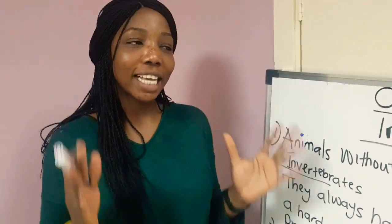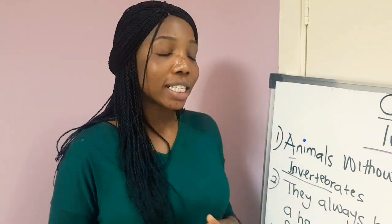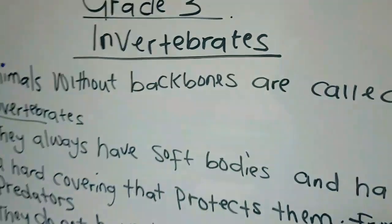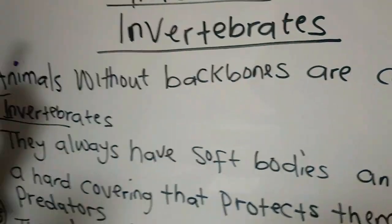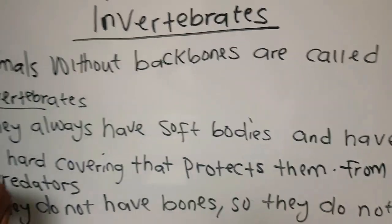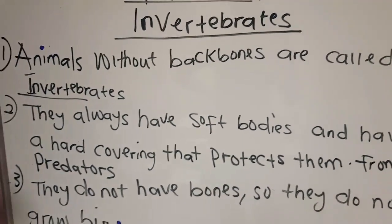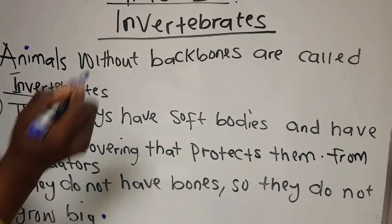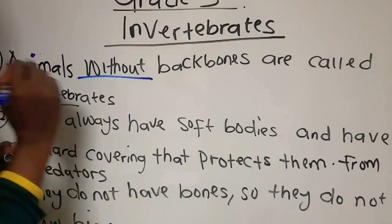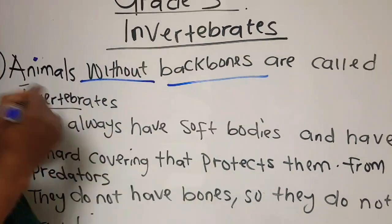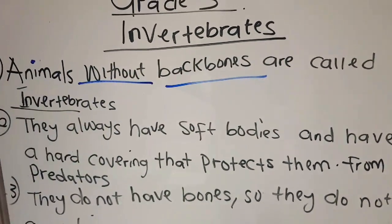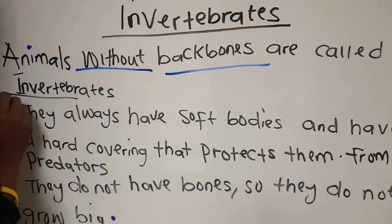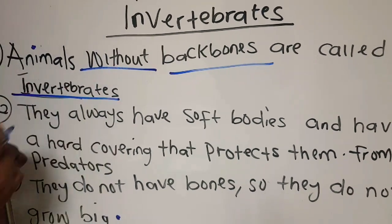Animals that are invertebrates. In the last lesson, we talked about vertebrates, which means animals that have backbones. But today, let's talk about animals without a backbone. And they are called invertebrates.